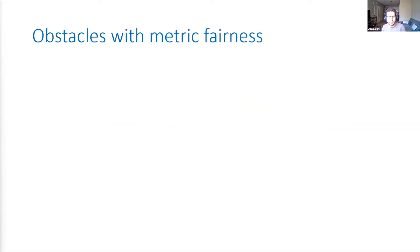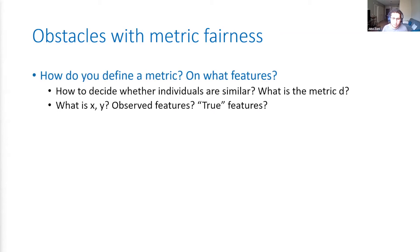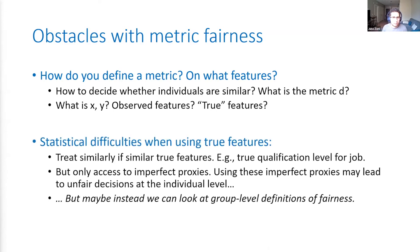That's a very natural definition of fairness, but there are difficulties in using it in practice. You have to decide what metrics to use — how do you decide what the distance Z is, and how are you going to decide whether individuals are similar? You also have to decide what features to compare — do I want to compare people based on their observed features, or based on their true features that I don't really have access to? If I say individuals are similar in true feature space, that leads to statistical difficulties, because I really only have access to imperfect proxies and incomplete information. Using these imperfect proxies may lead to unfair decisions at the individual level, because I just don't have enough information to know the true qualification level of each individual.